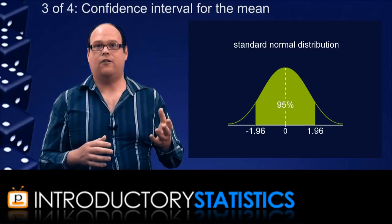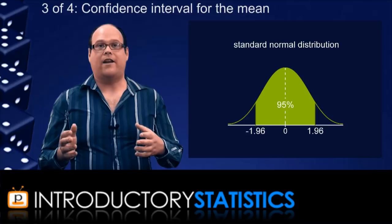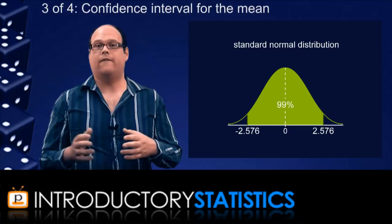So far we've looked at 95% confidence, and the critical values there are plus or minus 1.96. But if we wanted to have a 99% confidence interval, for example, the critical values would be further apart, plus or minus 2.576.